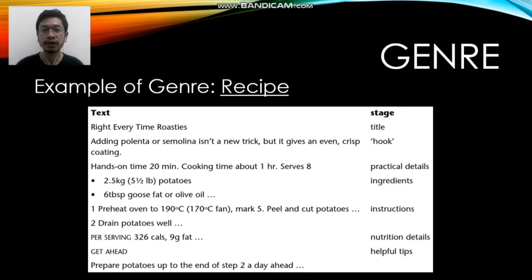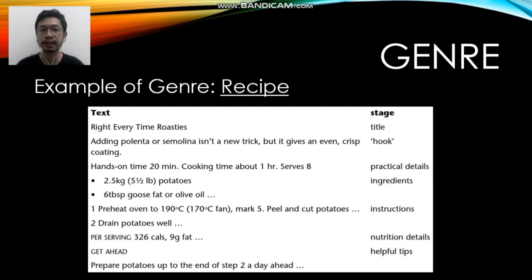That's all I need to talk about register and genre. I hope you understand what is meant by both terms. For the homework, please find an example of text — it can be spoken or written — and try to analyze the text in terms of its context, meaning you'll need to analyze the register and genre. If you have any questions, feel free to write them in the comment section.